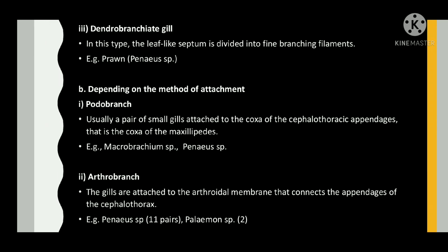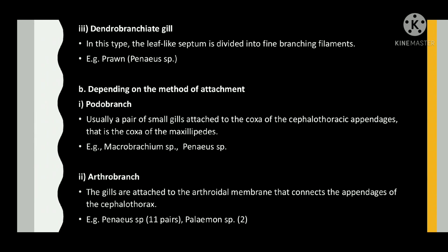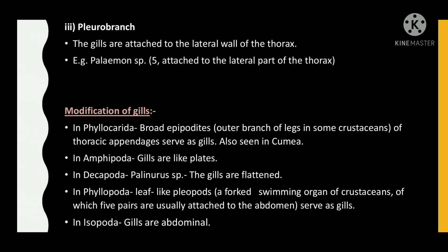Dendrobranchiate gill — in this type, the leaf-like septum is divided into fine branching filaments. For example, prawn. Depending on the method of attachment: Podobranch — usually a pair of small gills attached to the coxa of the cephalothoracic appendages, that is the coxa of the maxillipeds. For example, Macrobrachium species and Penaeus species. Arthrobranch — the gills are attached to the arthrodal membrane that connects the appendages of the cephalothorax. For example, Penaeus species and Palaemon species. Pleurobranch — the gills are attached to the lateral wall of the thorax. For example, Palaemon species.